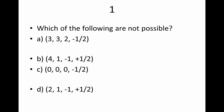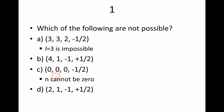Moving on to skill practice. Number one asks which of the following combinations are not possible. A is not possible because if N equals three, then L must be less than or equal to N minus one — that is, less than or equal to two — so L equals three is impossible. C is incorrect because N cannot be zero. B and D are correct.